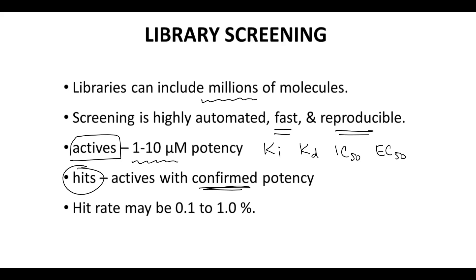The fraction of molecules that will advance as hits depends on the drug target, but depending on the screen, maybe 0.1 to 1% of your library might have promising potency. For a million-member library, that would be 1,000 hits from a screening program. The next step in the program is to choose which of the hits are going to receive additional attention to hopefully find a drug.